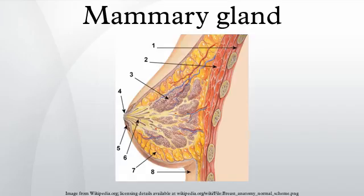Mammary glands are true protein factories, and several labs have constructed transgenic animals, mainly goats and cows, to produce proteins for pharmaceutical use. Complex glycoproteins such as monoclonal antibodies or antithrombin cannot be produced by genetically engineered bacteria, and the production in live mammals is much cheaper than the use of mammalian cell cultures.